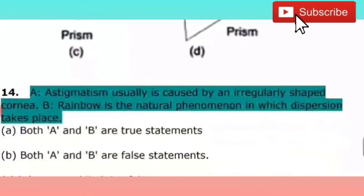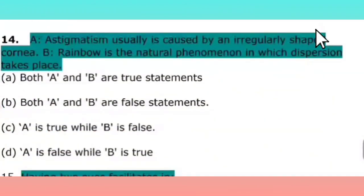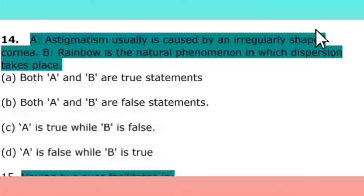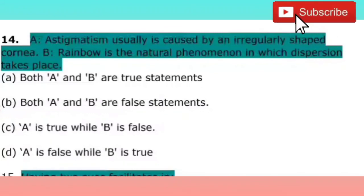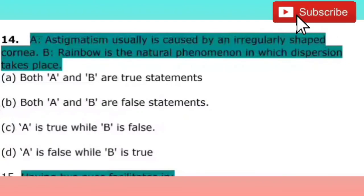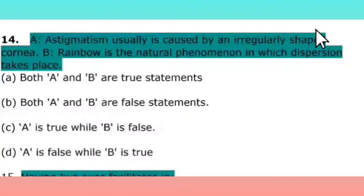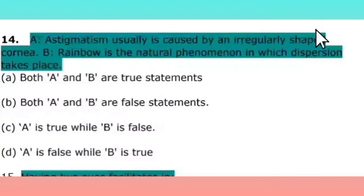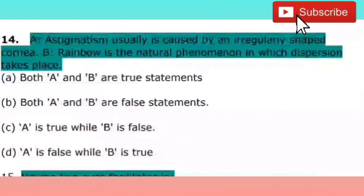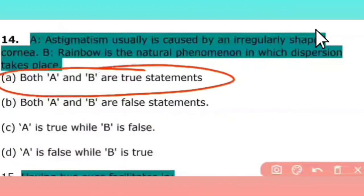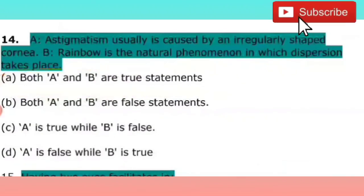The next question has two assertion-type statements. You need to tell whether both are true, both false, or one true and one false. Statement A: astigmatism is usually caused by an irregularly shaped cornea. Statement B: rainbow is a natural phenomenon in which dispersion takes place. Both statements are true. So A is the right answer.